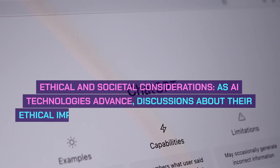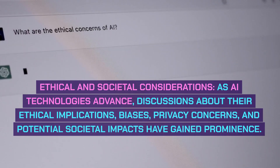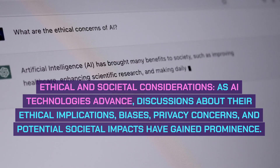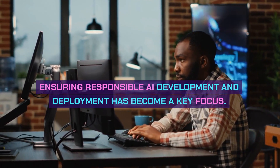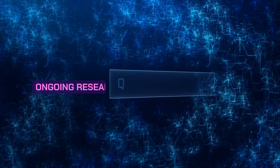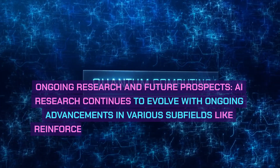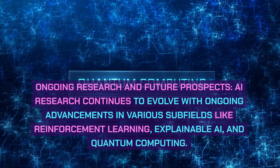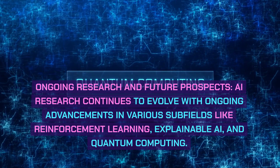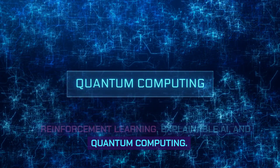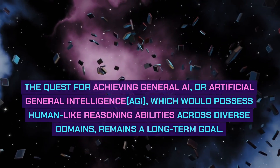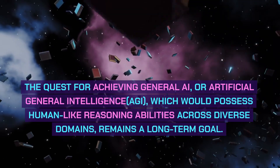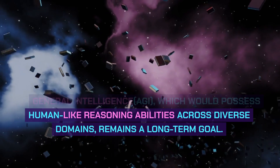Ethical and societal considerations: As AI technologies advance, discussions about their ethical implications, biases, privacy concerns, and potential societal impacts have gained prominence. Ensuring responsible AI development and deployment has become a key focus. Ongoing research and future prospects: AI research continues to evolve with advancements in subfields like reinforcement learning, explainable AI, and quantum computing. The quest for achieving general AI, or Artificial General Intelligence (AGI), which would possess human-like reasoning abilities across diverse domains, remains a long-term goal.